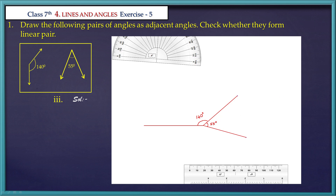This is 140 degrees plus 55 degrees, which is equal to 195 degrees. 195 degrees is not equal to 180 degrees. 180 degrees is a straight angle. So this is not a linear pair.